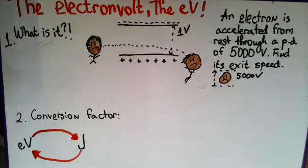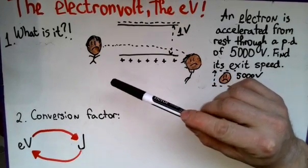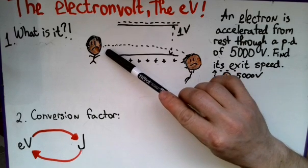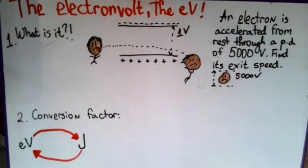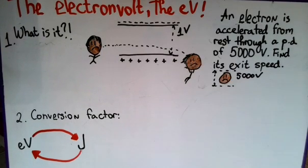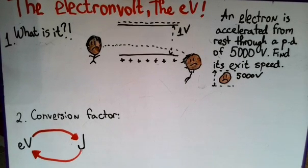The electron volt is a unit of energy. I've got this world-class drawing over here to try and represent what happens. Imagine this over here is an electron — you can see that it's negative — and it goes through a potential difference. In practice, this could just be a couple of parallel plates, and you've attached electrodes to either side, and you've given a voltage, a potential difference between them.